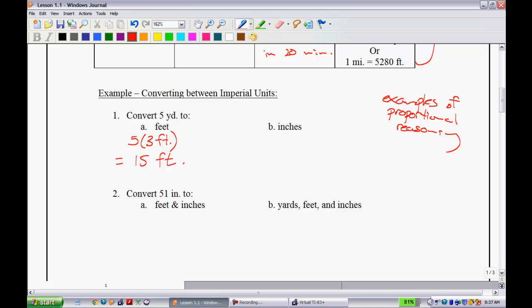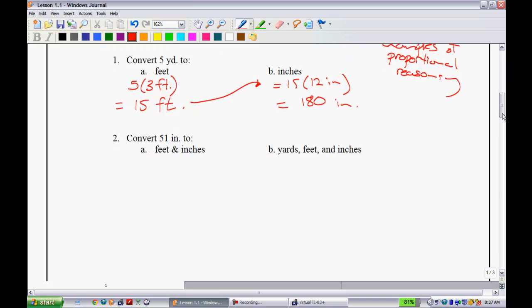How about converting 5 yards into inches? Since we've already converted it to feet, that's not too bad. This is equal to 15 feet, and we know that there's 12 inches in a foot. If we multiply 15 times 12, that gives you 180 inches.